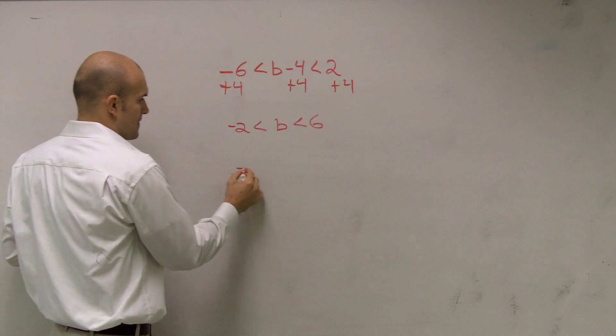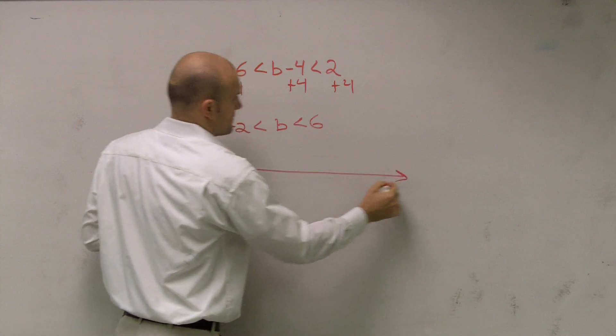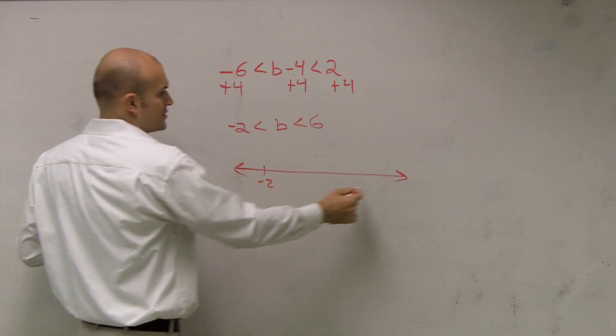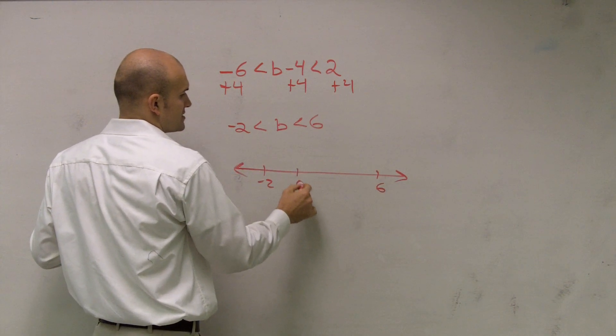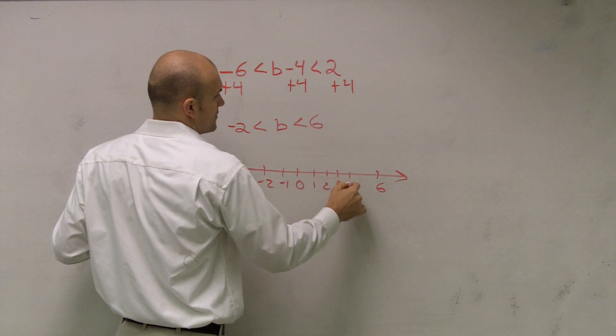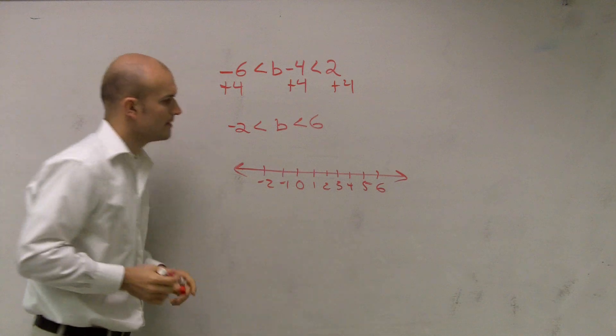So if I want to graph this, I say, all right, it's going to go between negative 2, and it's going to be between 6. I say 0, negative 1, 1, 2, 3, 4, 5. All right?